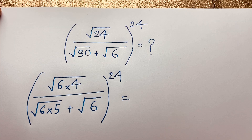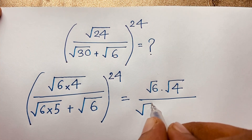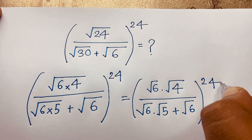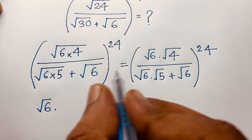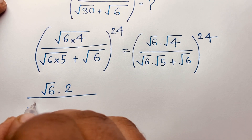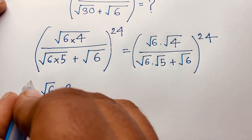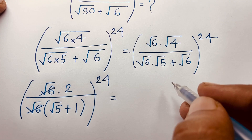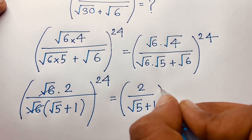Now we can rewrite this as square root of 6 times square root of 4, over square root of 6 times square root of 5 plus square root of 6, whole to the power 24. Square root of 4 equals 2. Square root of 6 is common in the denominator, so we get: 2 over square root of 6 times (square root of 5 plus 1). The square root of 6 cancels, giving us 2 over (square root of 5 plus 1), whole to the power 24.